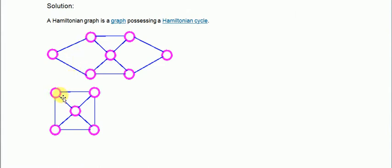One more example: 1, 2, 3, 4, 5. So this particular graph is also a Hamiltonian graph.